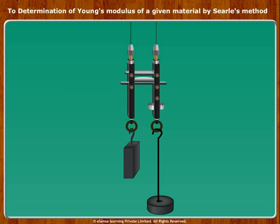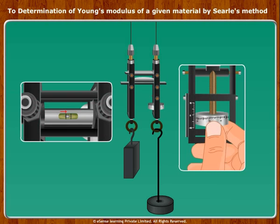Let us add some weight to the hanger so that the experimental wire becomes free of kinks. Call the hanger as dead weight as it is not taken into calculation. The screw attached to the frame is used to make the spirit level horizontal.